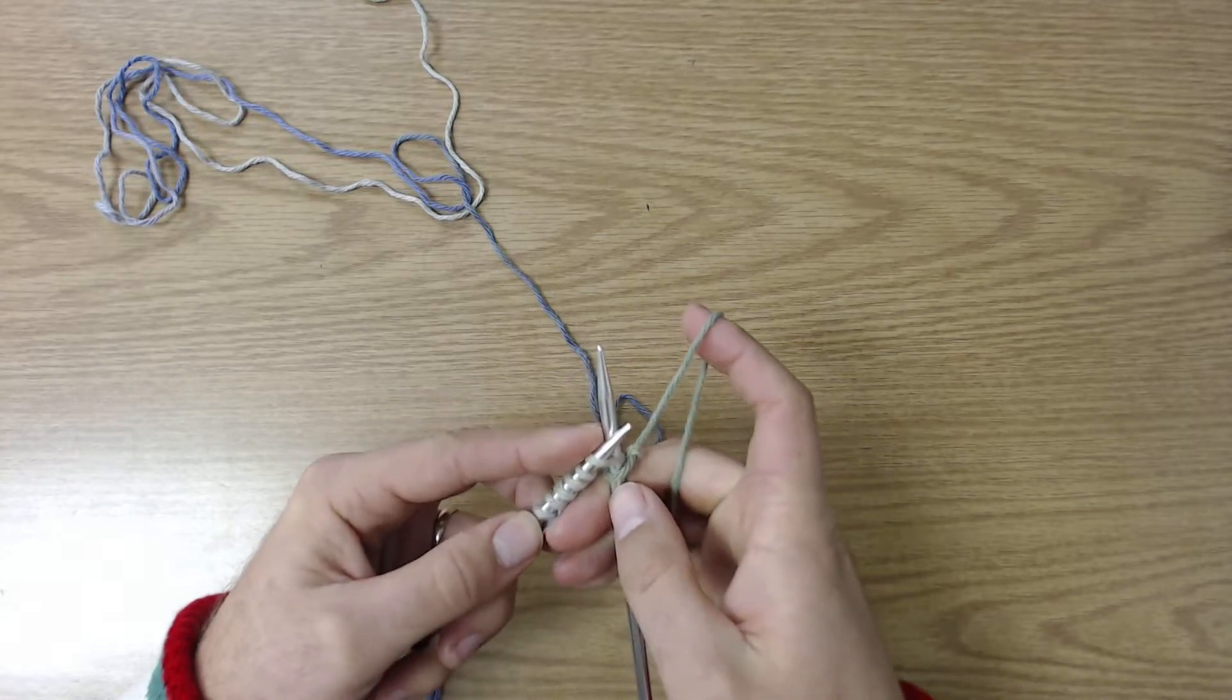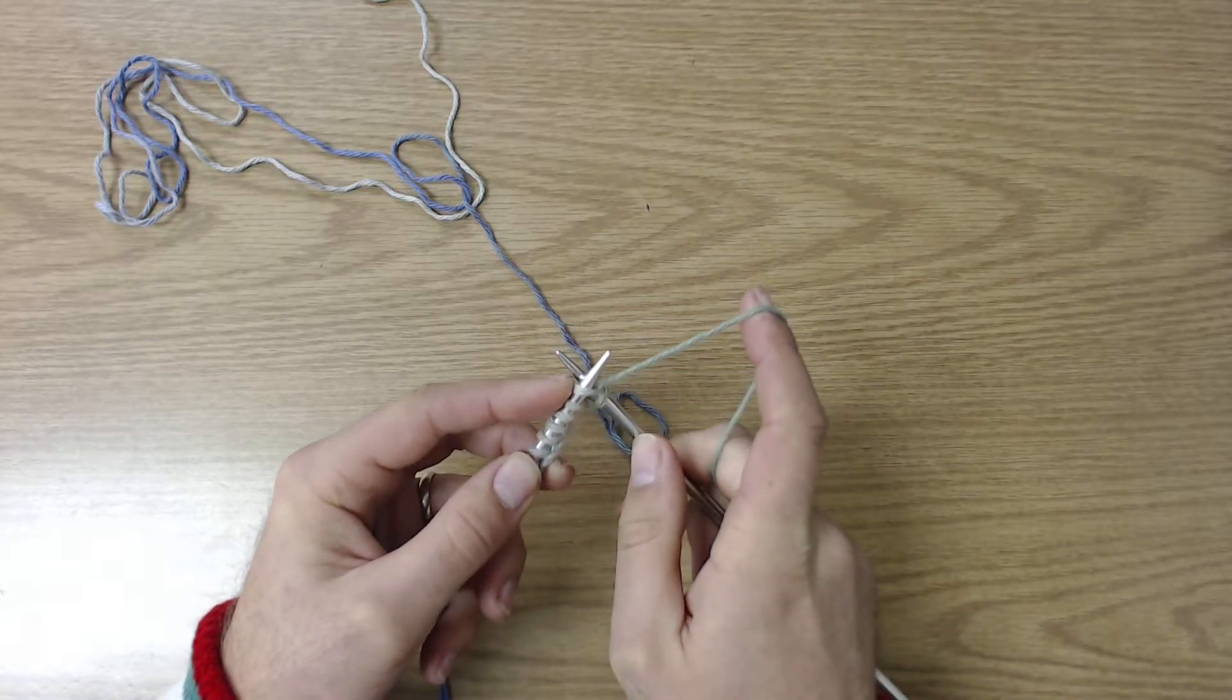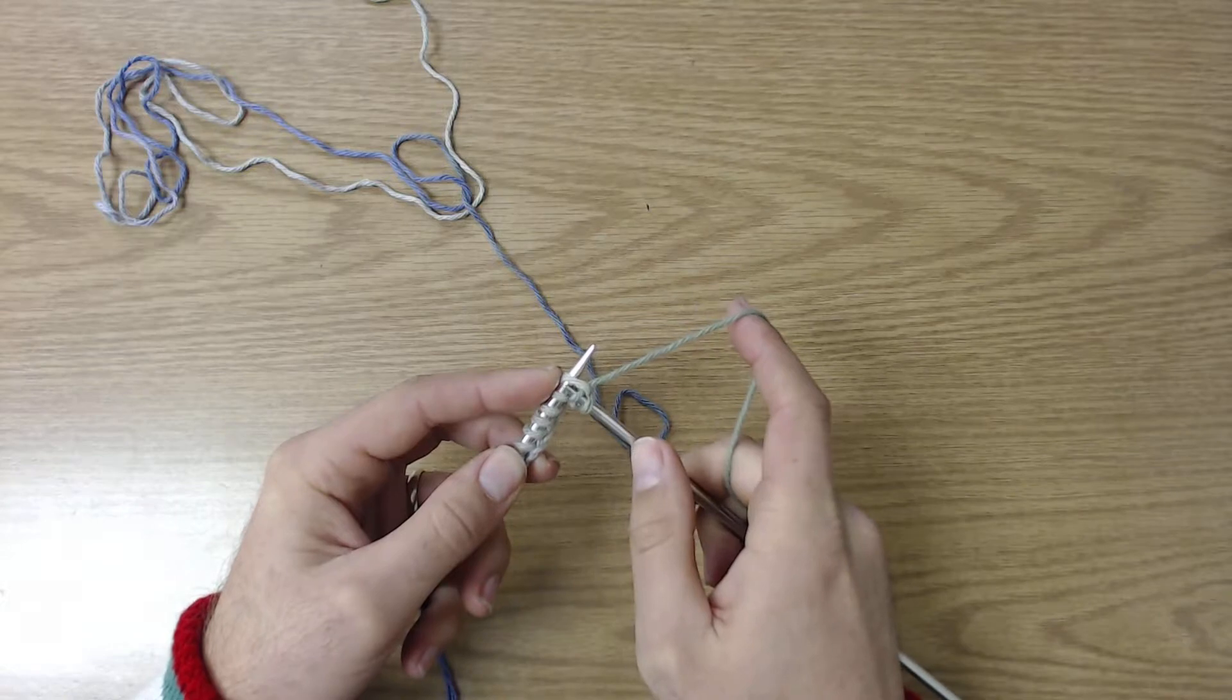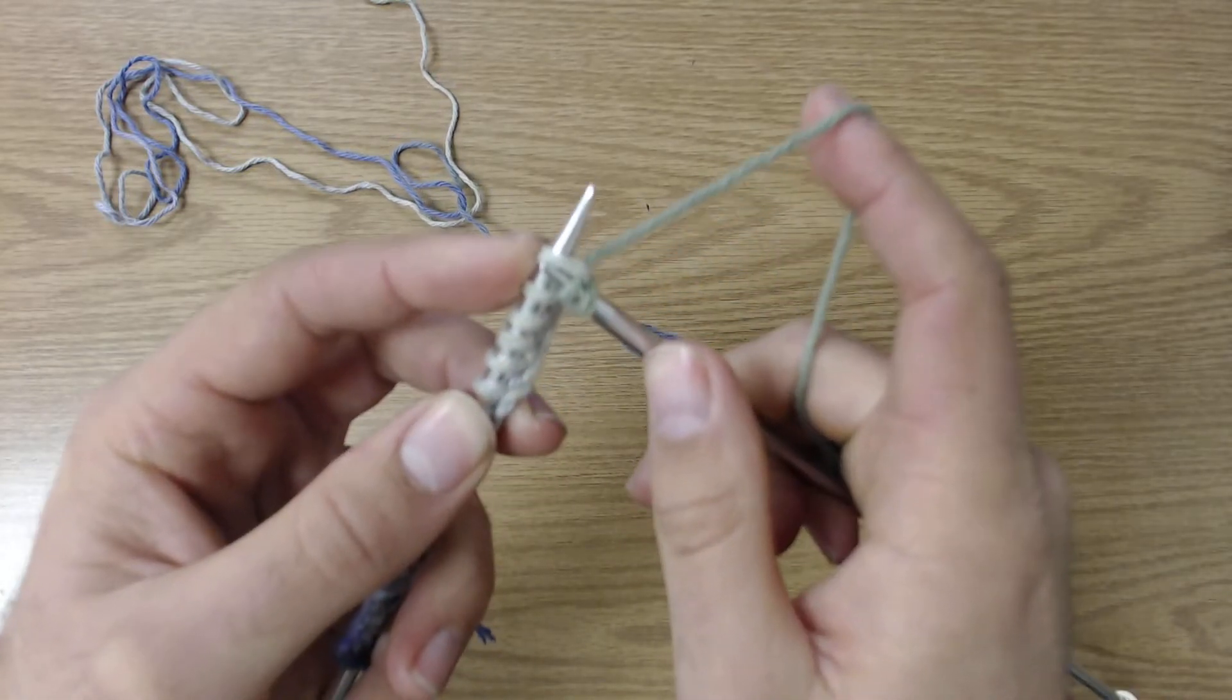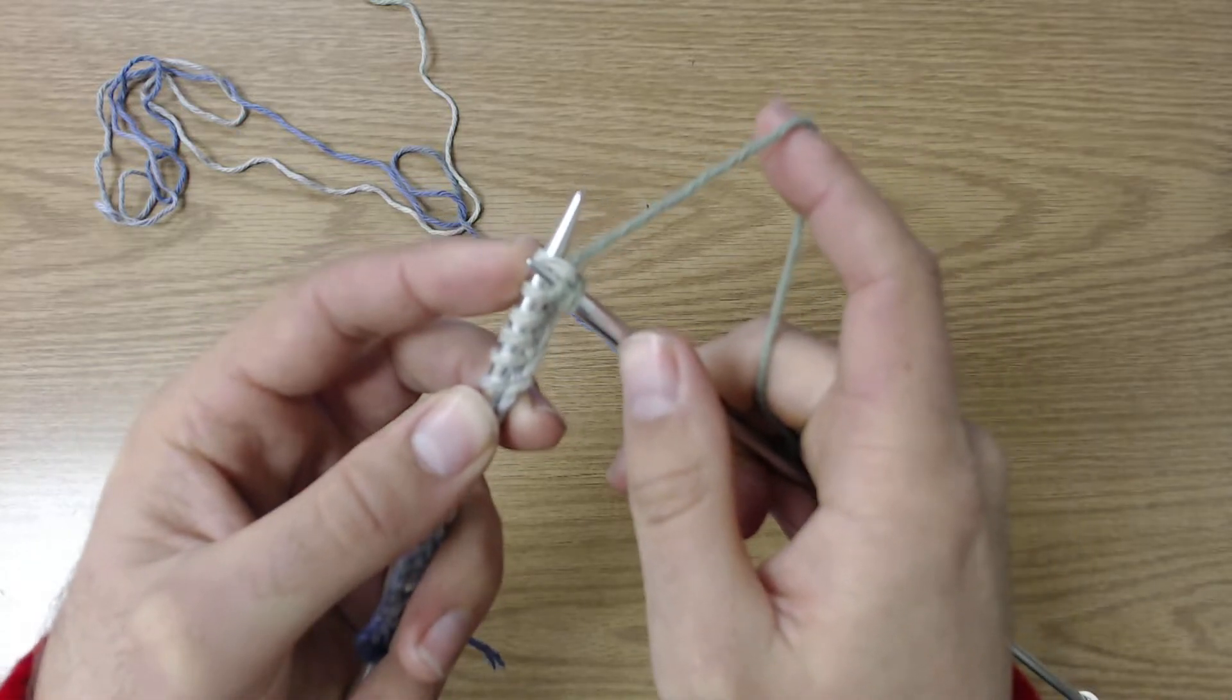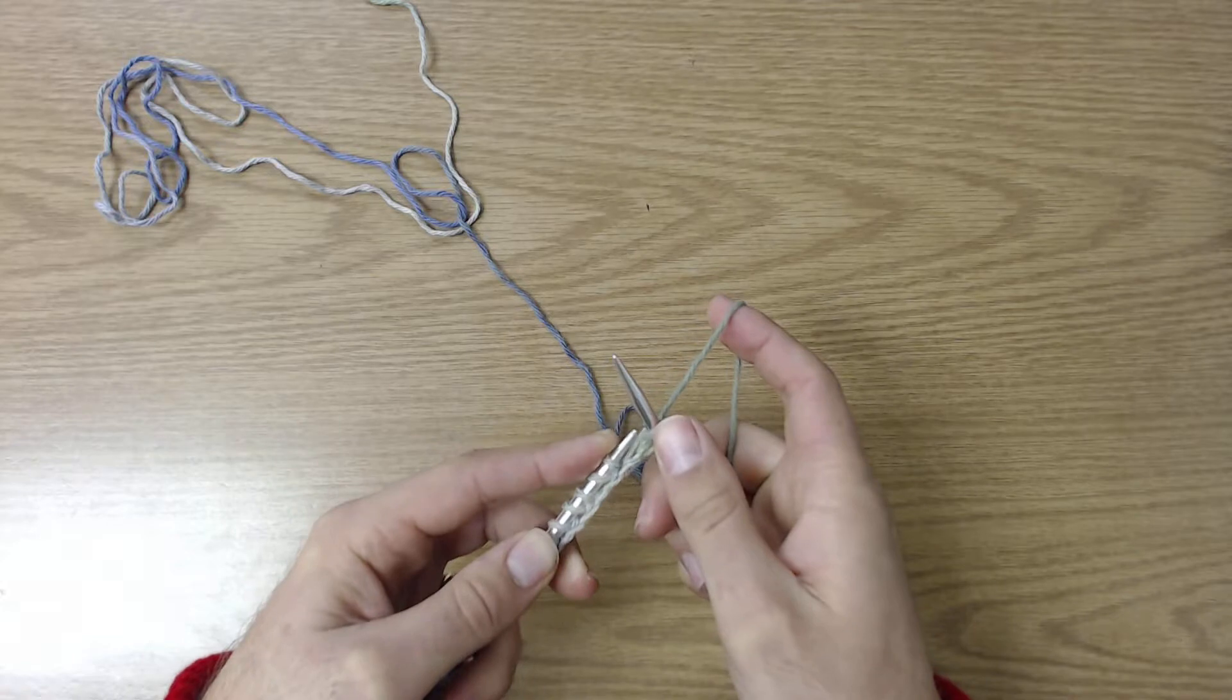So I poke my right needle through my left loop. Yarn around. I push down and under that loop. Hopefully you can see that. So I come down and under. And then I push that loop off my left needle.